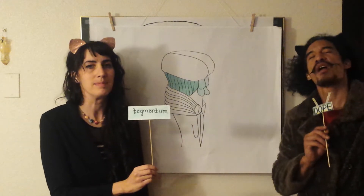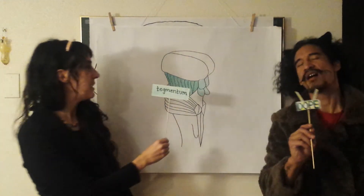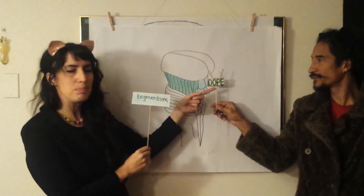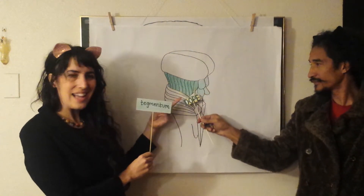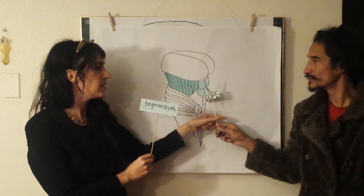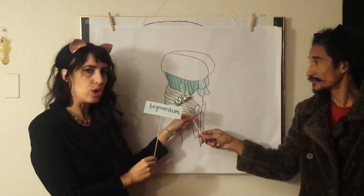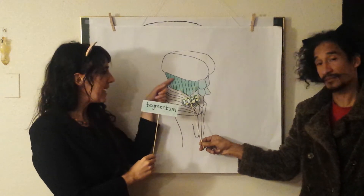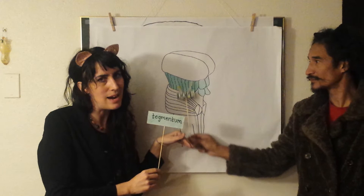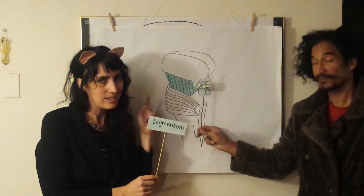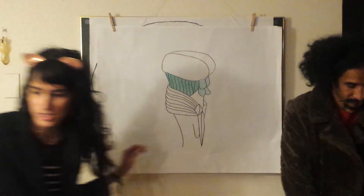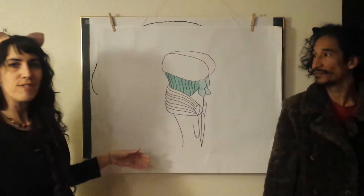The tectum's partner in crime is DJ tegmentum. DJ tegmentum likes when you move it move it with its dope beats — that's because it's chock full of neurons that produce dopamine. Tegmentum and tectum holding down the midbrain.